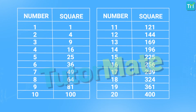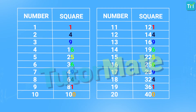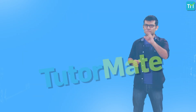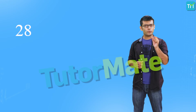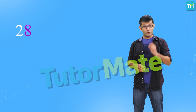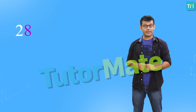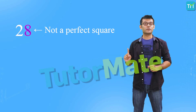When we observe the squares of the first 20 natural numbers, we find that the only digits that can be present in the units place of the square of any number are 0, 1, 4, 5, 6 and 9. So we can find out whether a number is a perfect square or not just by looking at the last digit of that number. If I give you a number, say 28, can you tell me whether it is a perfect square? Just look at the last digit — it is 8. And we know that 8 cannot be the last digit of any square. Therefore, 28 is not a perfect square.